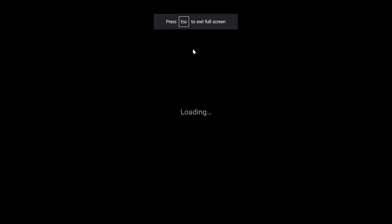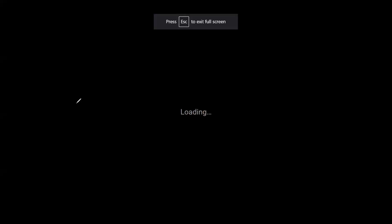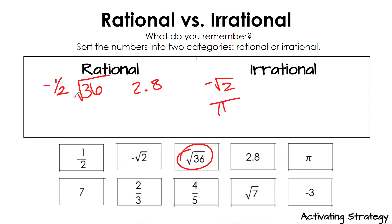So when we're sorting this, where does negative 1 half go? Negative square root of 2, irrational. Square root of 36, rational, because it's actually simplified to 6, right? 2.8. Irrational for pi. 7 is rational. Two-thirds is rational. Four-fifths is rational. Square root of 7 is irrational, and negative 3 is rational.